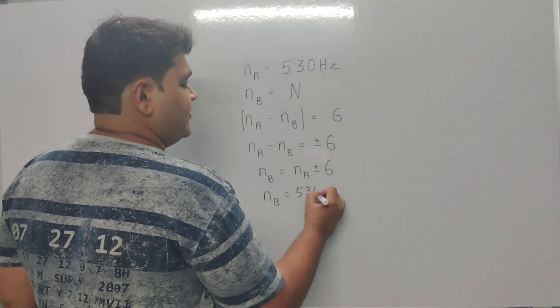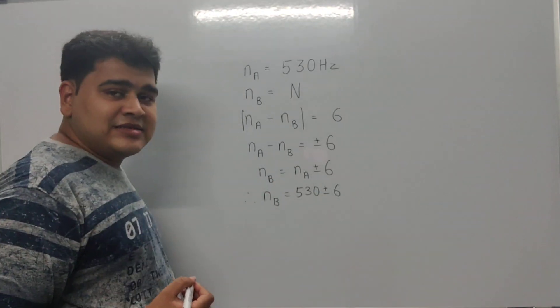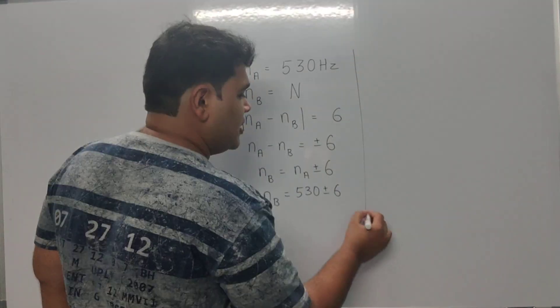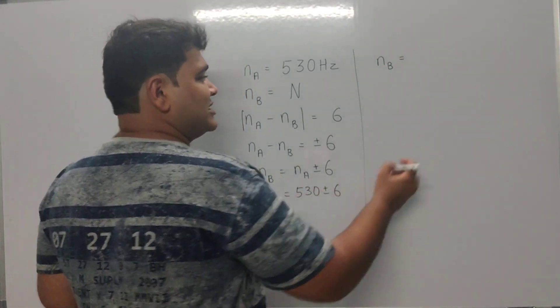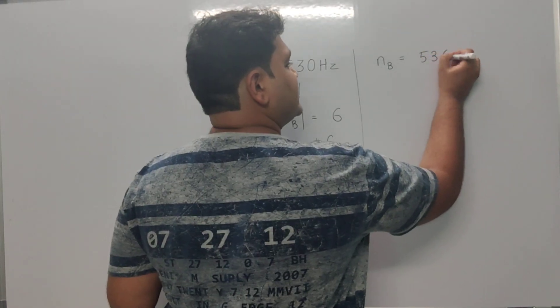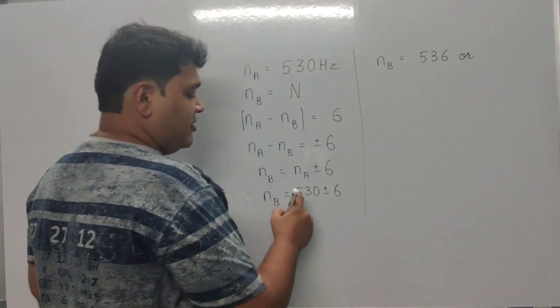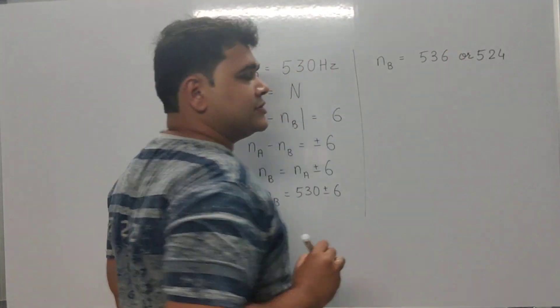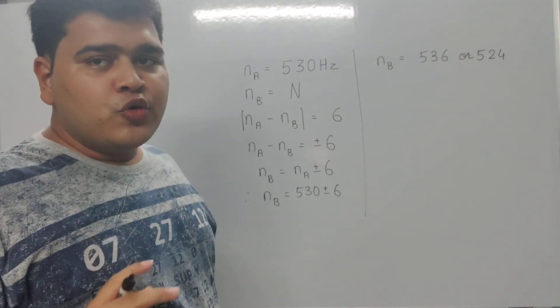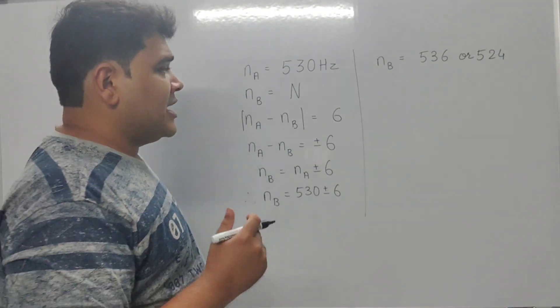That means the value of N_B can be 530 plus 6, which is 536, or 530 minus 6, which is 524 Hz. So one of the two is the answer for sure.